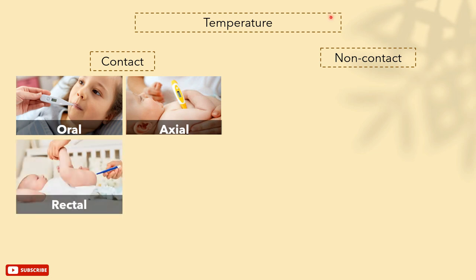Rectal thermometers are placed in the rectal opening and are usually used with infants. The measurement is different from the oral temperature — it is about half a degree higher.